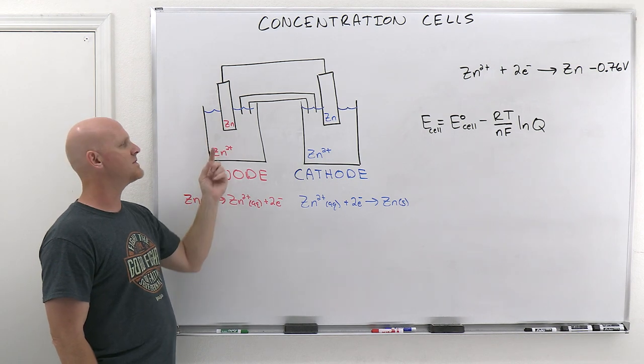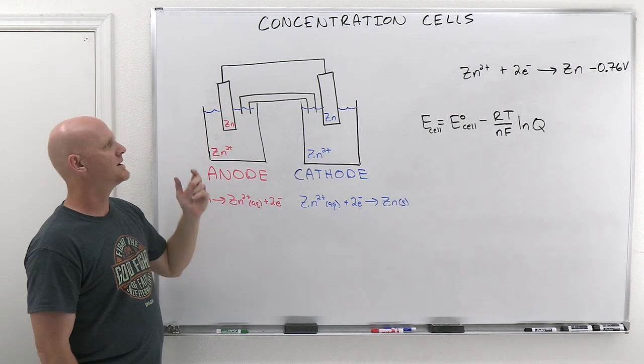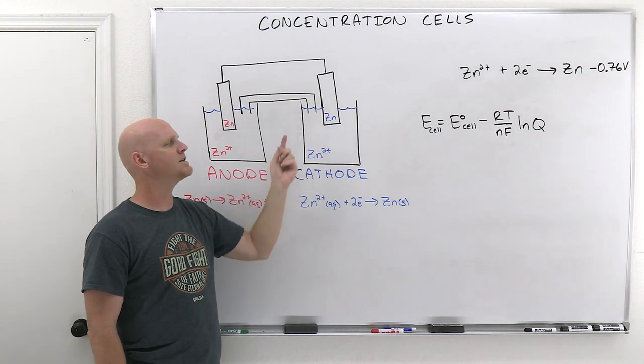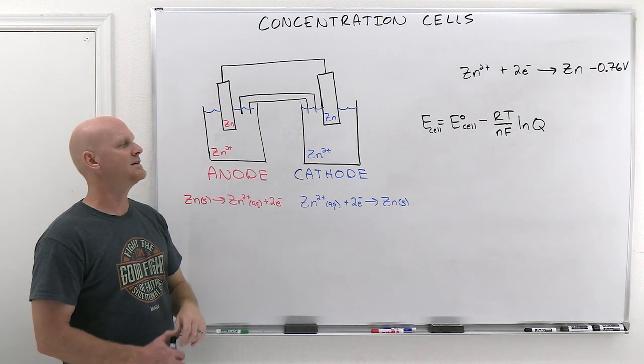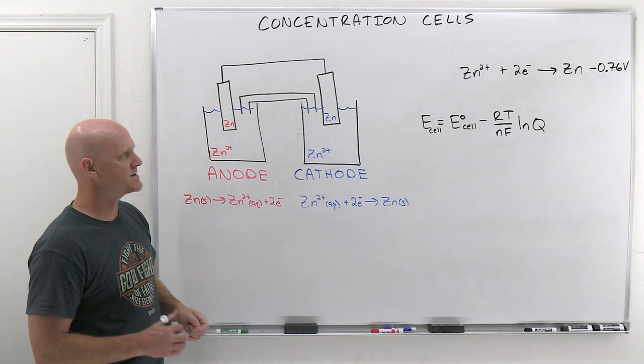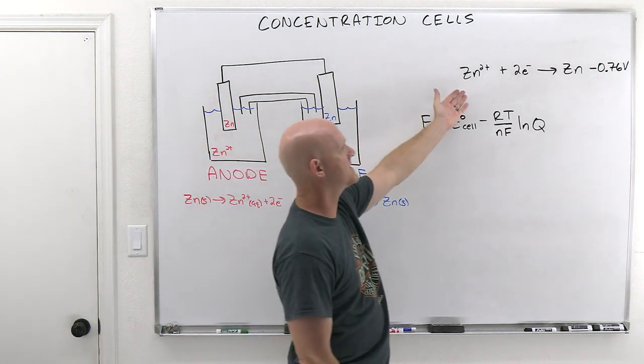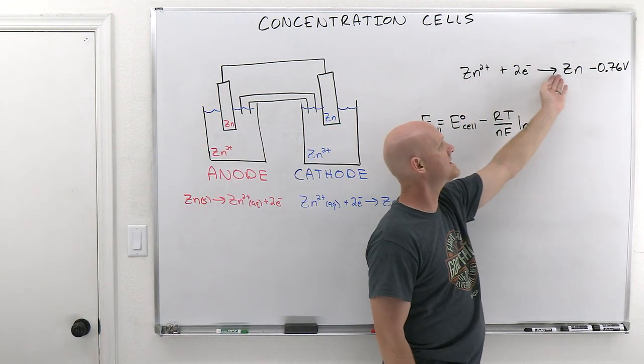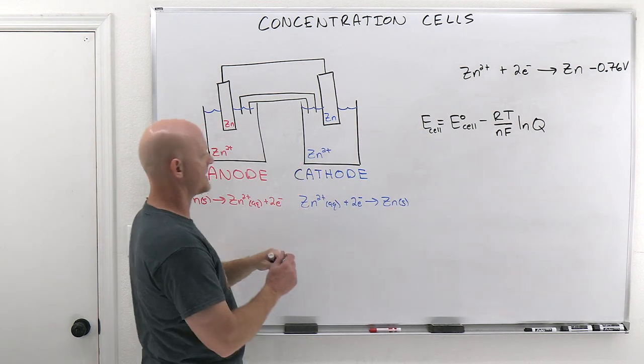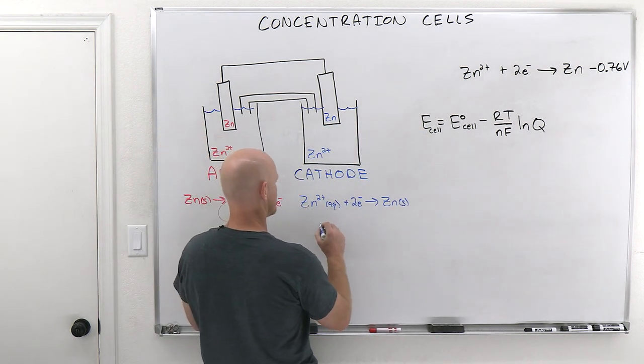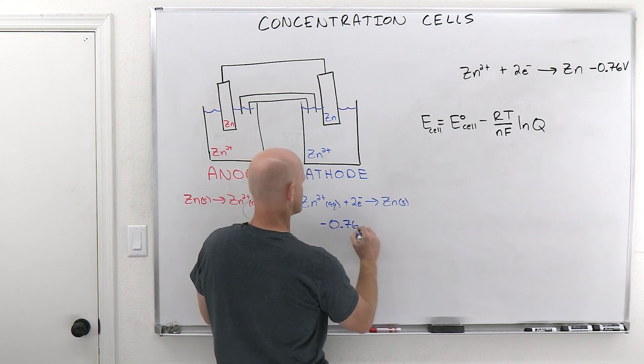So if you notice, here the anode's made of zinc, and there's zinc two plus in the solution around it. Here the cathode's made of zinc, and there's zinc two plus in the solution around it. So this is going to be a little bit strange. If you look at our relevant half reaction here, so the reduction of zinc two plus to zinc is negative 0.76 volts. And so you can kind of see here, well that's what goes on in the cathode, that's where reduction takes place. That's going to be negative 0.76 volts.